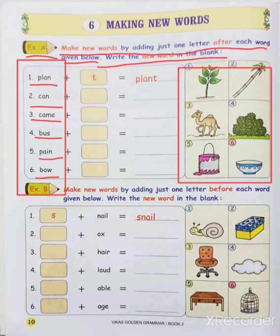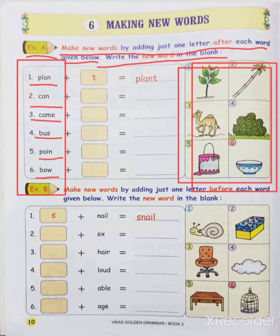Plan is something we make. Can — we can do it. Came — they came. Bus — as you know, bus. Pain means dard hona. Bow — arrow and bow. These are the words. But what we have to do? We have to add one letter which can make a new word. There is a picture also, so we have to look at the picture. The first one is already given: P, L, A, N — plus one new letter.